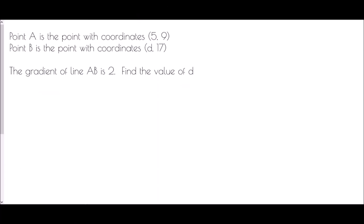Finally we look at a situation where two points are given but one coordinate is missing, and we know the gradient. Point A is (5, 9), point B is (D, 17), and the gradient of line AB is 2. Find the value of D.